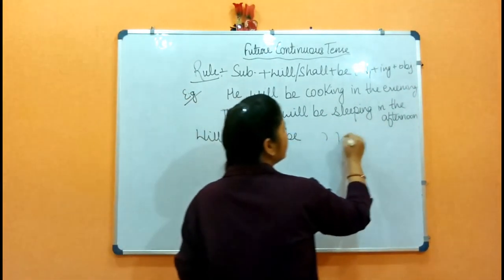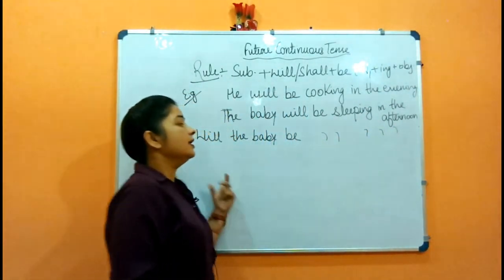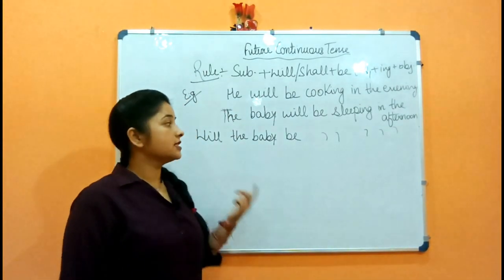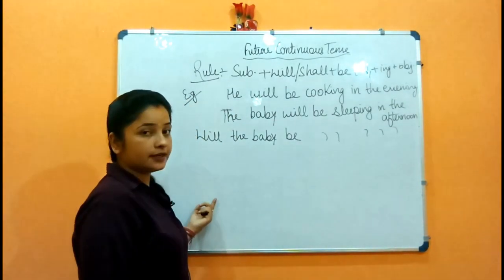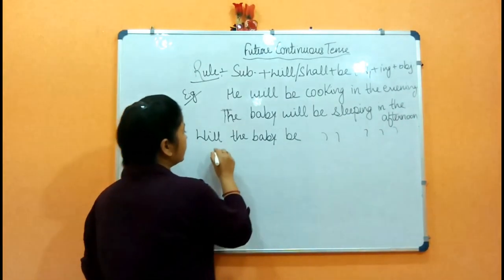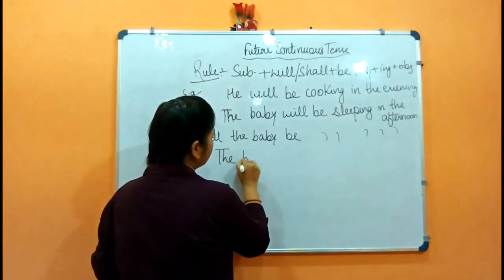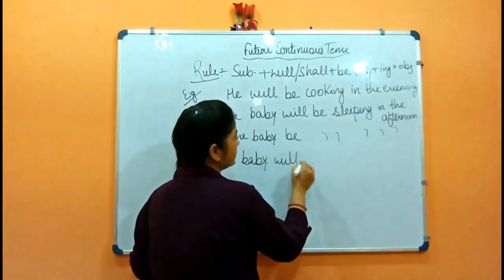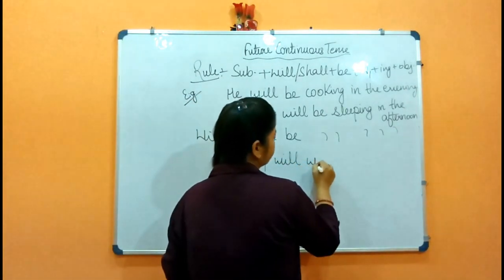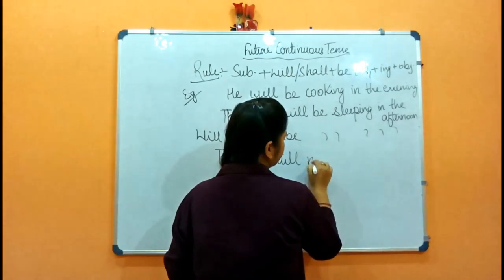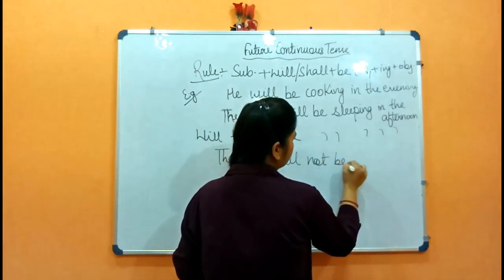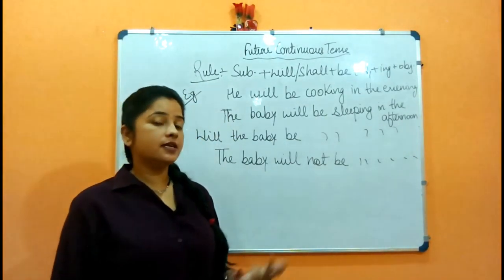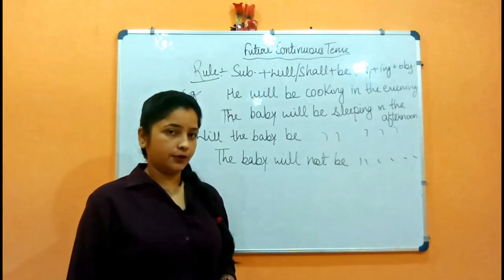Interrogative: 'Will the baby be sleeping in the afternoon?' — क्या जो baby है वो afternoon में सो रहा होगा? This is the interrogative form. Now the negative: 'The baby will not be sleeping in the afternoon' — baby जो है वो सो नहीं रहा होगा afternoon में.